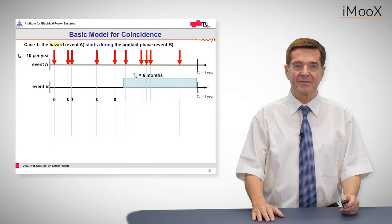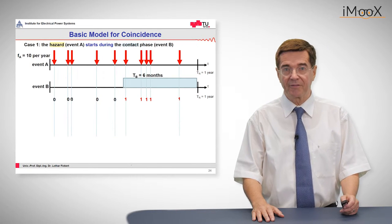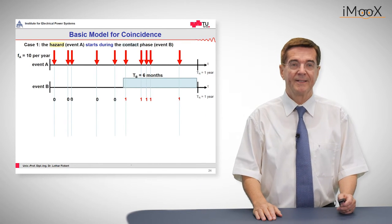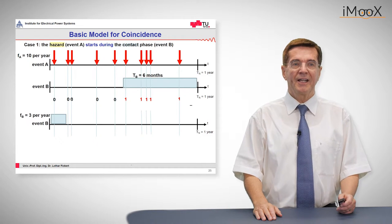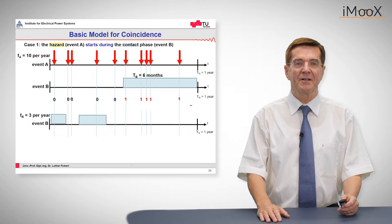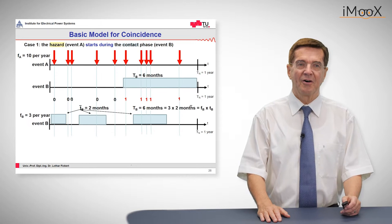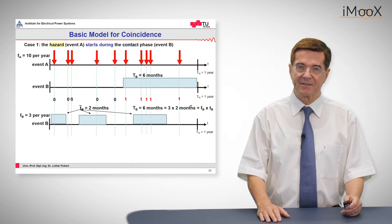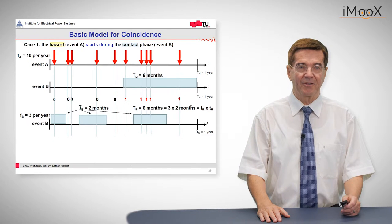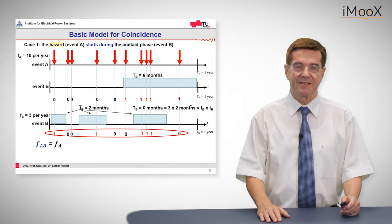The same will happen, you see here, half of the events is with no consequences, half of the events is dangerous. This is indicated by the red figures of one. The same situation may occur if we have this contact situation distributed over one year with an average contact duration of two months and this happens three times so it is six months contact situation again. It is the same output as before. Namely we have five dangerous incidents.